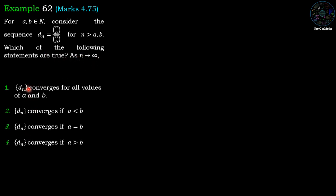Option one: dn converges for all values of a and b. Option two: dn converges if a is less than b. Option three: dn converges if a equals b. Option four: dn converges if a is greater than b.